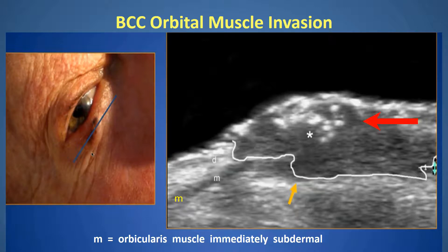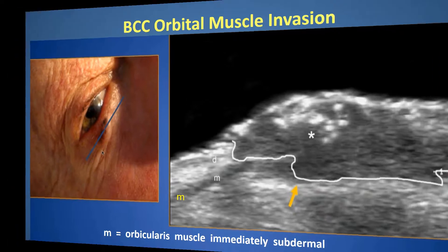Notice the white dots in the center by the star. This is important because there was really no way, preoperatively, to tell how aggressive a basal cell is. These white dots are seen in aggressive basal cell cancers and indicate the kind that may metastasize.